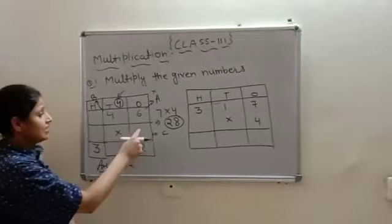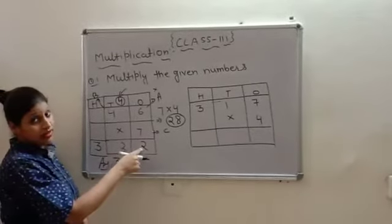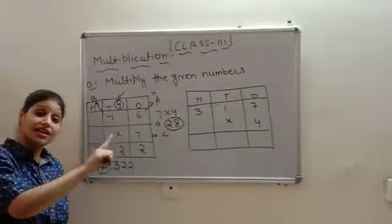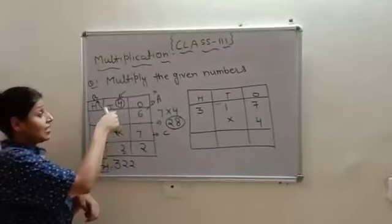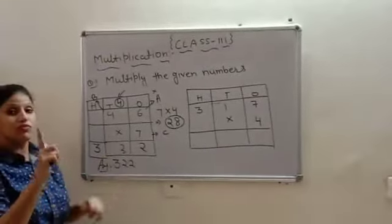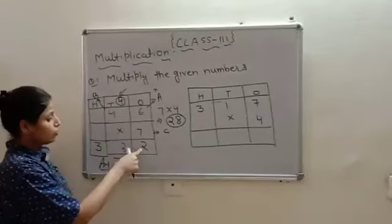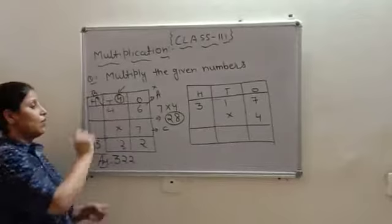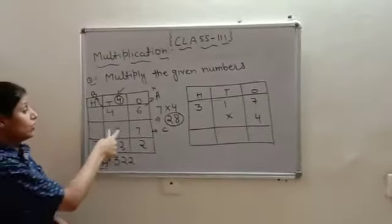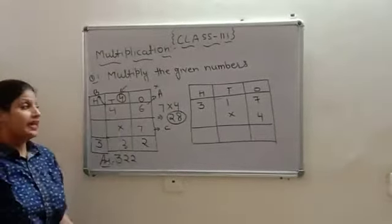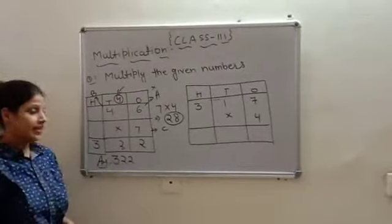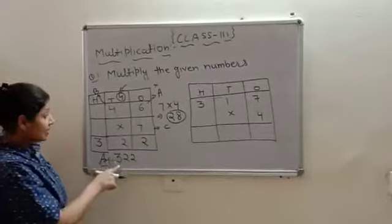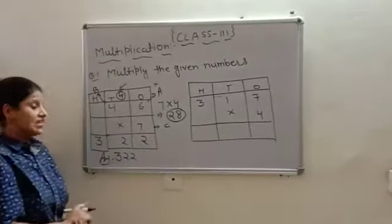Let's multiply and check. 7 sixes are 42. 2 will be here. We do same thing in addition also. The other, the ten's place number we carry over to the next place. Here also, we will follow that rule. So, 2 will be here. And, next digit will be at ten's place, which is 4. Now, 7 fours are 28. Plus 4, 32. 2 will be here.